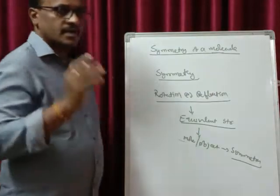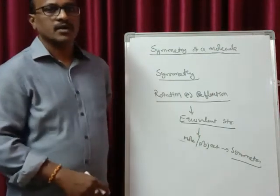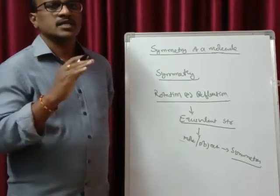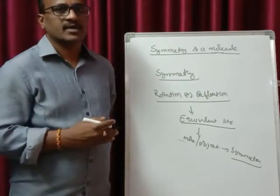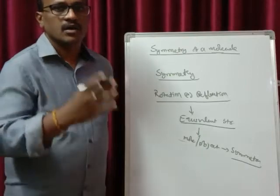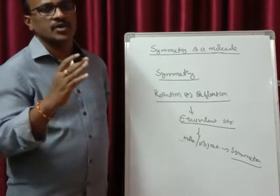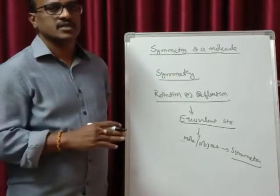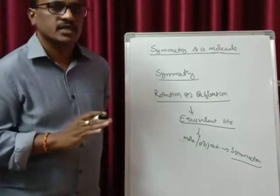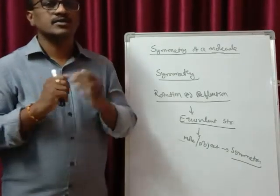It is quite simple. Throughout this entire unit, all you have to see is that rotation of a molecule along a particular axis, or reflection of a molecule through a plane, if it gives you an equivalent structure or not. If it gives you an equivalent structure, then we say that molecule has symmetry.